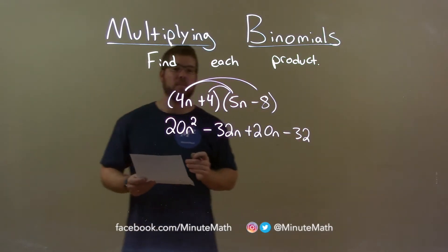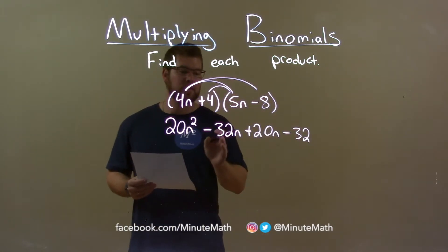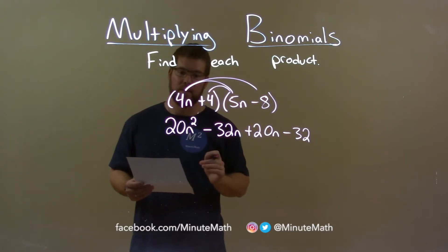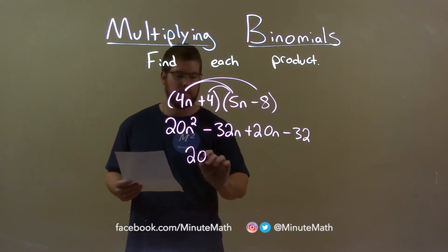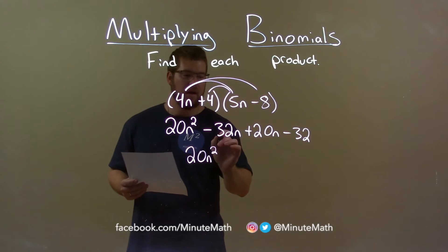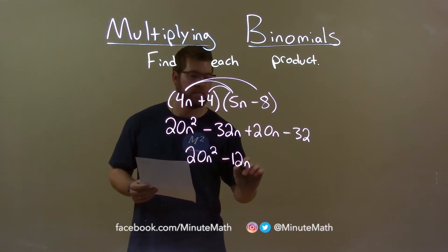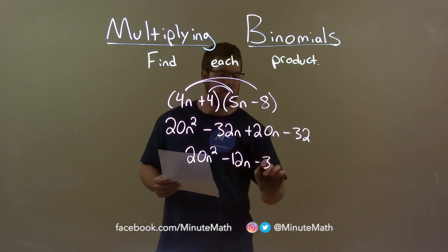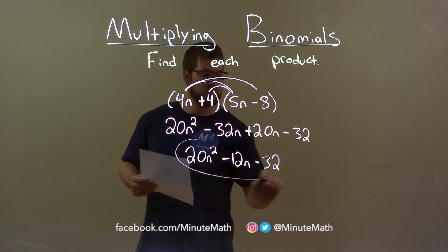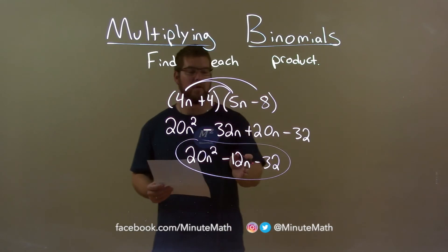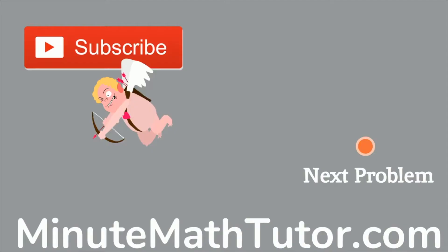We now want to combine our like terms, which is the minus 32n and the 20n. 20n squared comes down and minus 32n plus 20n is minus 12n and we bring down the minus 32. And our final answer is 20n squared minus 12n minus 32.